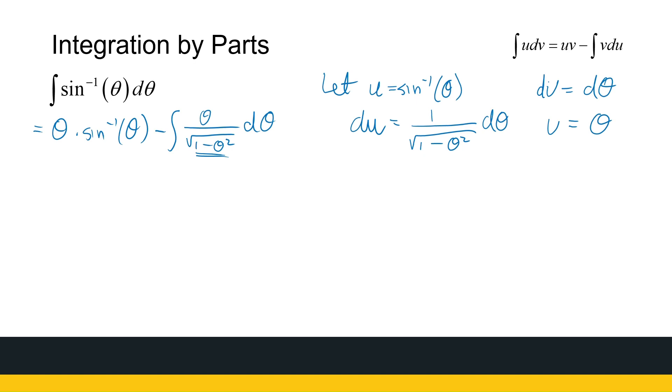Now, I've already used u, so I can't use u again. So let's choose a different variable. Let p be equal to 1 minus theta squared. dp is then minus 2 theta d theta. Now, I've got a theta d theta. So that's minus 1 half dp.